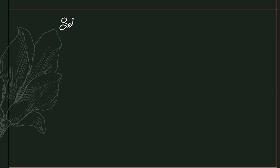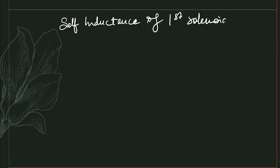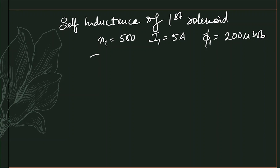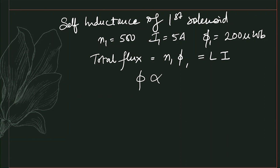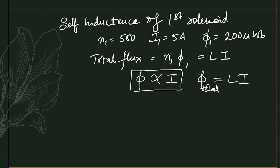First we will find the self-inductance of the first solenoid. We are given N1 = 500, i1 = 5 ampere, and the average flux φ1 = 200 micro-weber. The total flux is N1·φ1, which equals L times I, because the total flux is directly proportional to the current flowing through it. So we can write: φ_total = L·i.